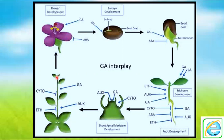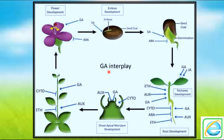The expansion of the shoot is promoted by auxin and gibberellic acid, while cytokinin and ethylene inhibit shoot expansion. In flower development, flower formation is promoted by gibberellic acid, auxin, and cytokinin — with gibberellic acid playing the basic role. With the presence of abscisic acid, flower development is inhibited. These are the hormones that play an important role in the various stages of growth and development.